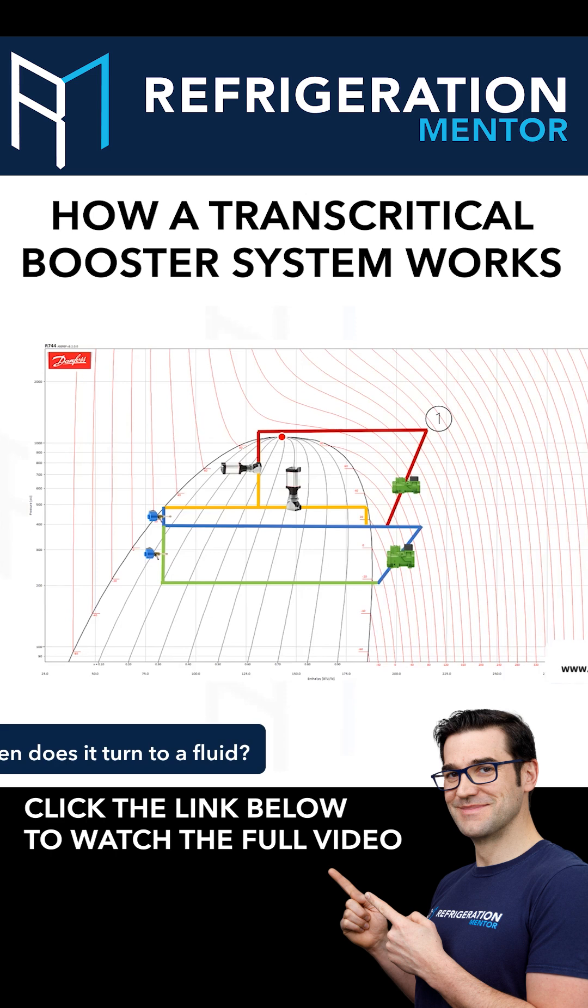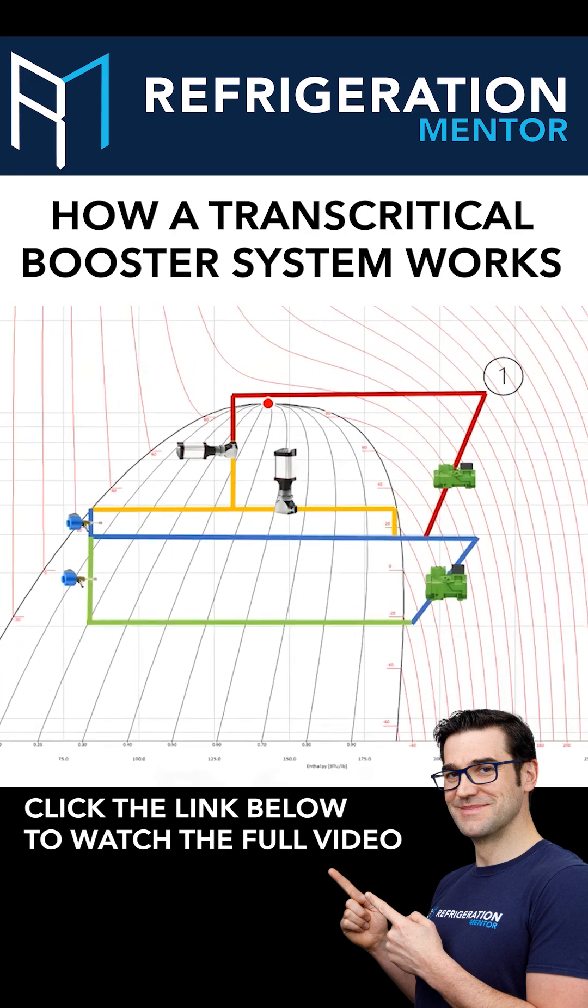And then as it goes through the gas cooler, it's cooled down. So from one to two, as you see on these points here, when we go from one to two, this is actually where the gas cooler condenser is. And 2.2 is at the outlet.